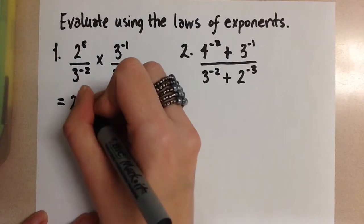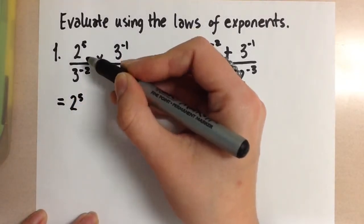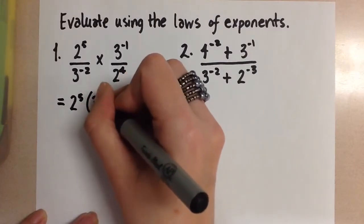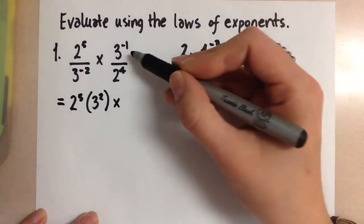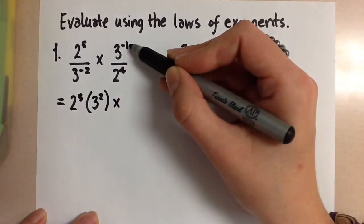And we have 2 to the 5 and the 3 squared is going to move up into the numerator. So this becomes 2 to the 5 times 3 squared. Then for the second term the 3 to the negative 1 is going to be 1 over 3.